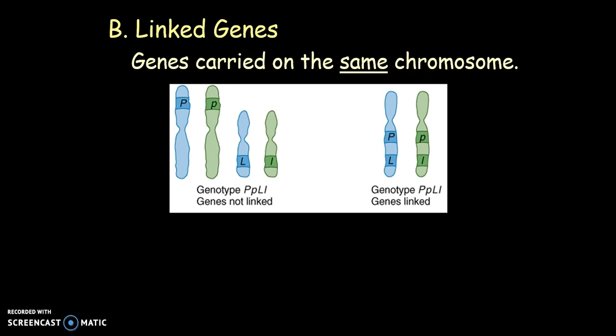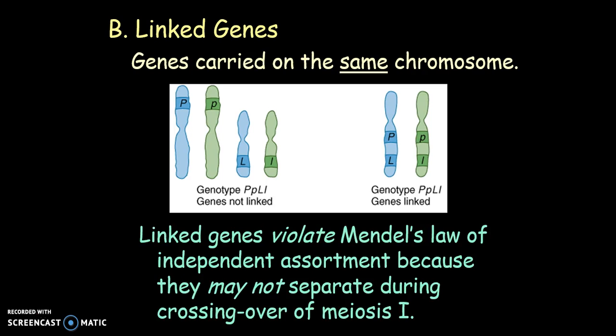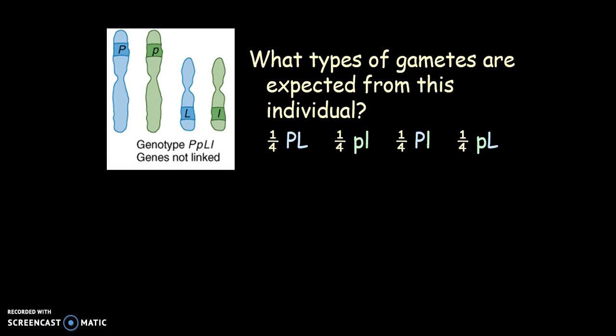We're talking about linked genes — these are genes that are carried on the same chromosomes. Linked genes may violate Mendel's laws because they may not independently assort; they may not separate during crossing over in meiosis I. As far as linked genes go, they do not change position from generation to generation. Here's just a little example of this.